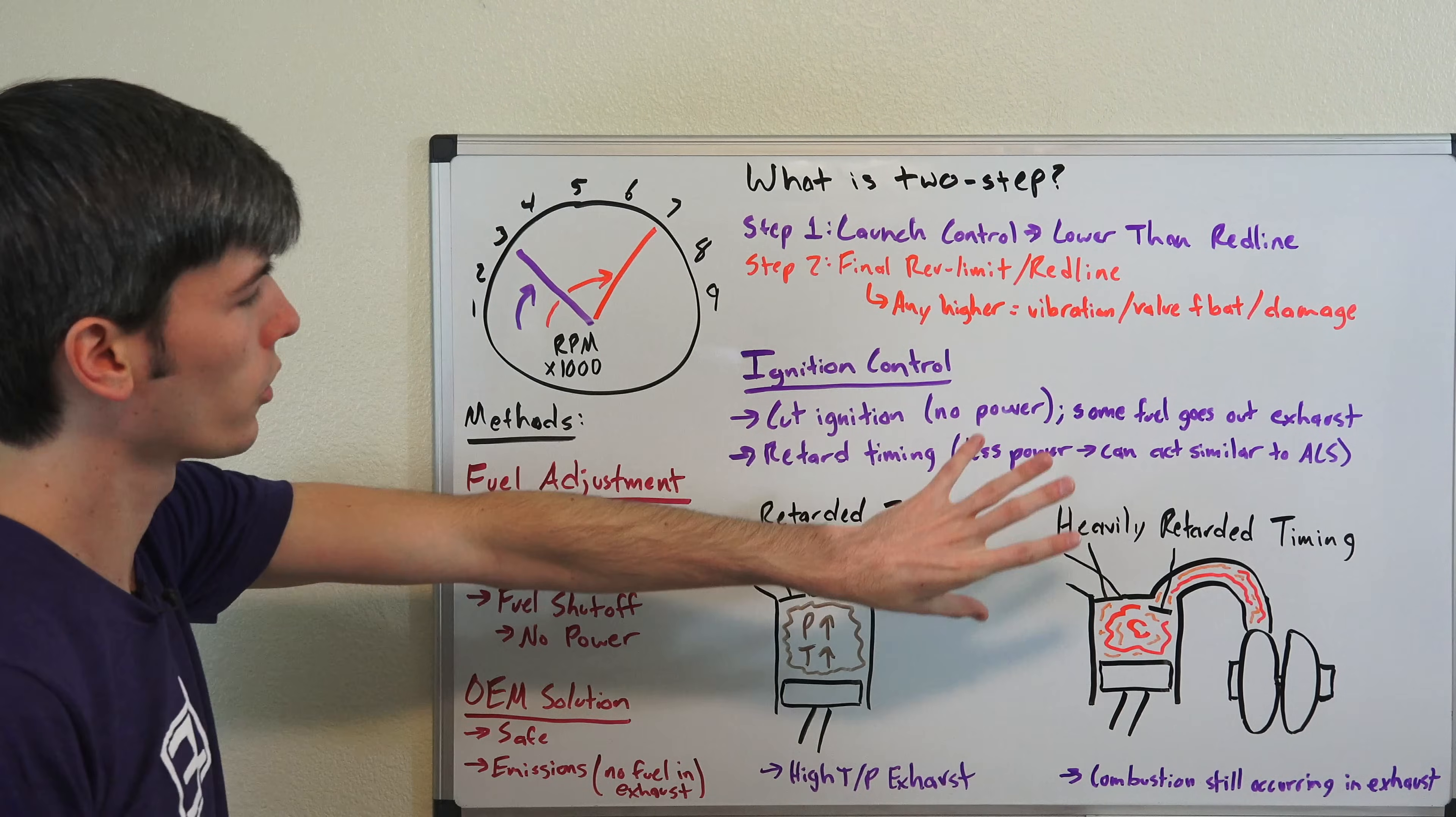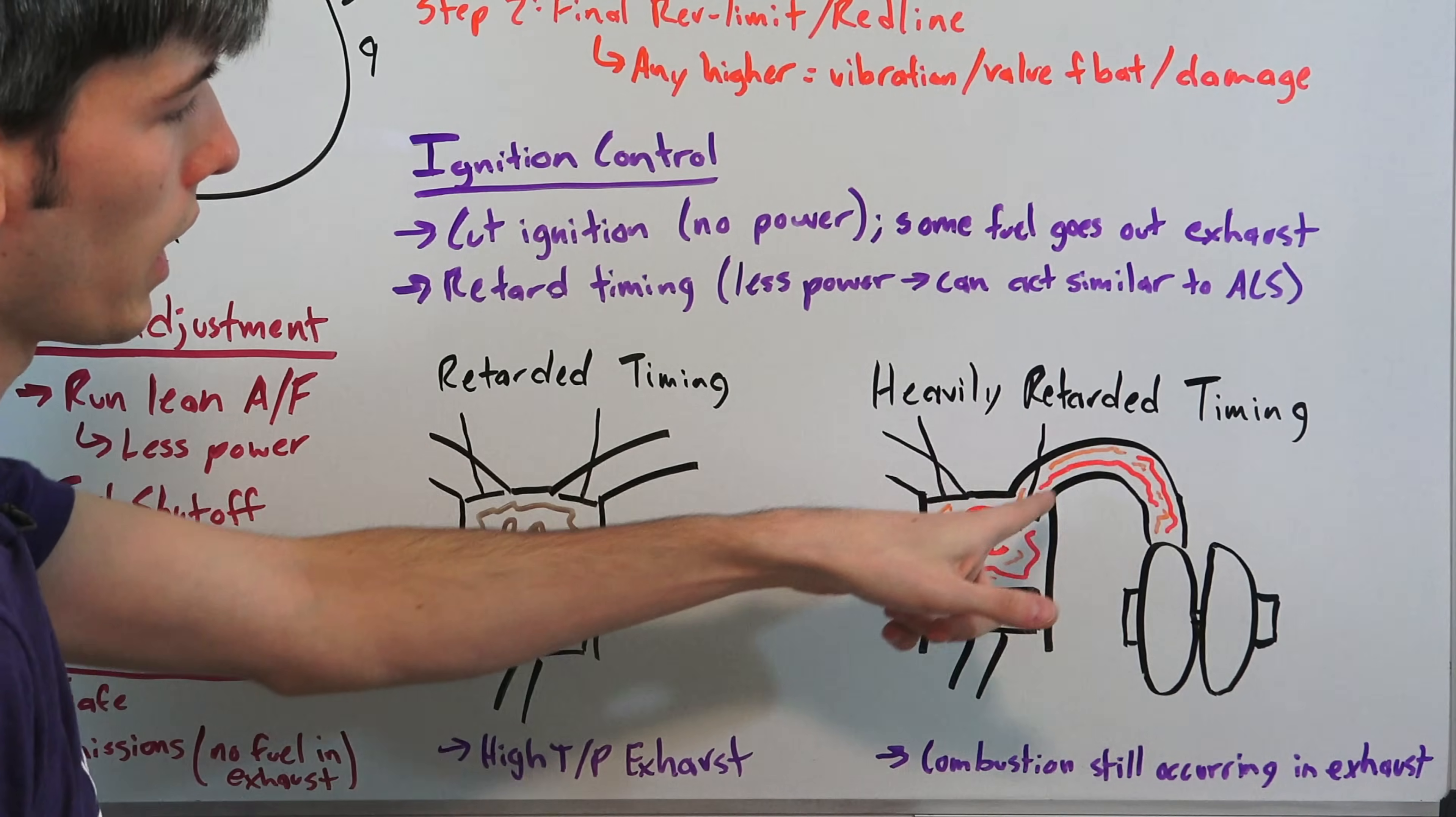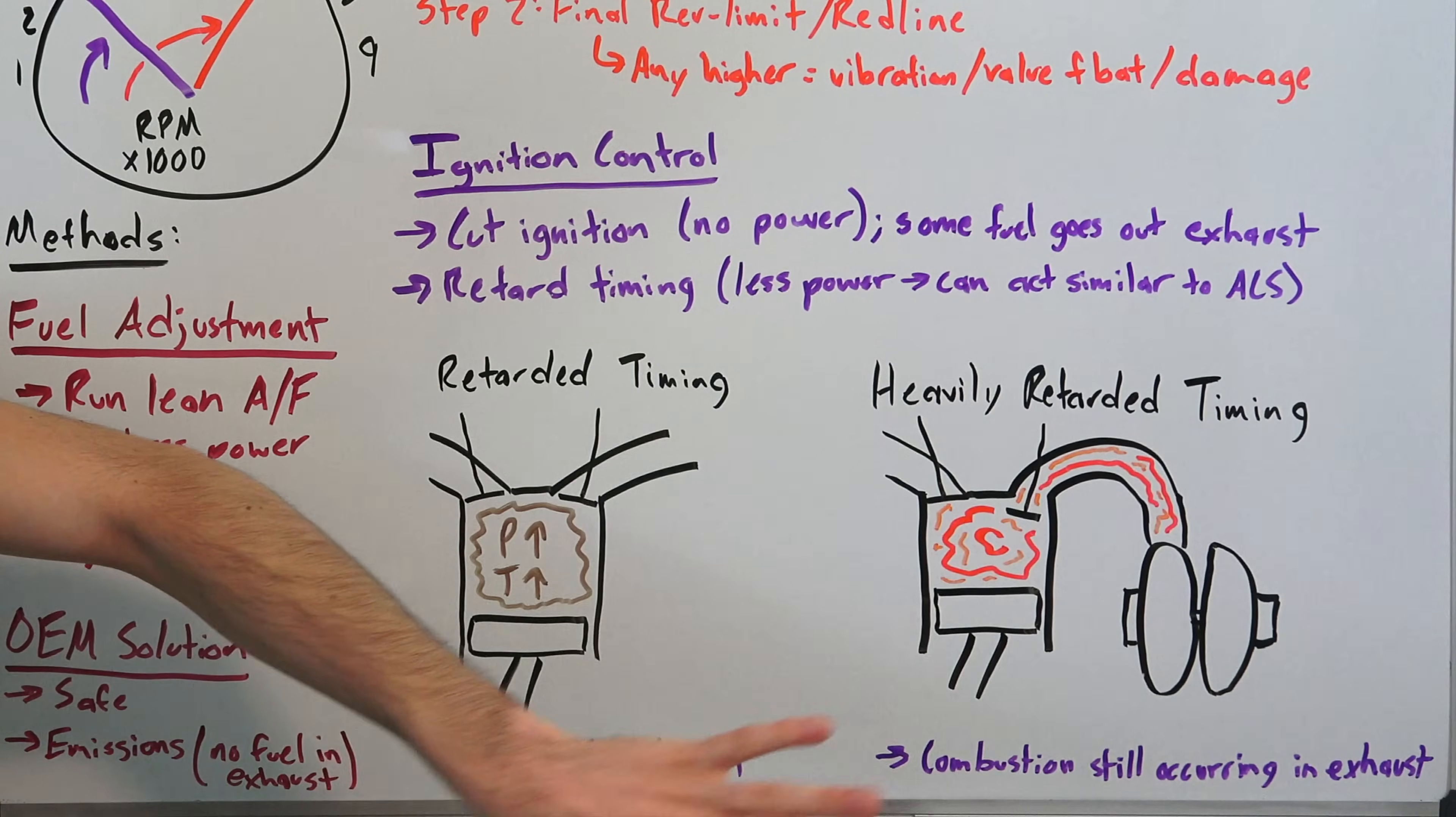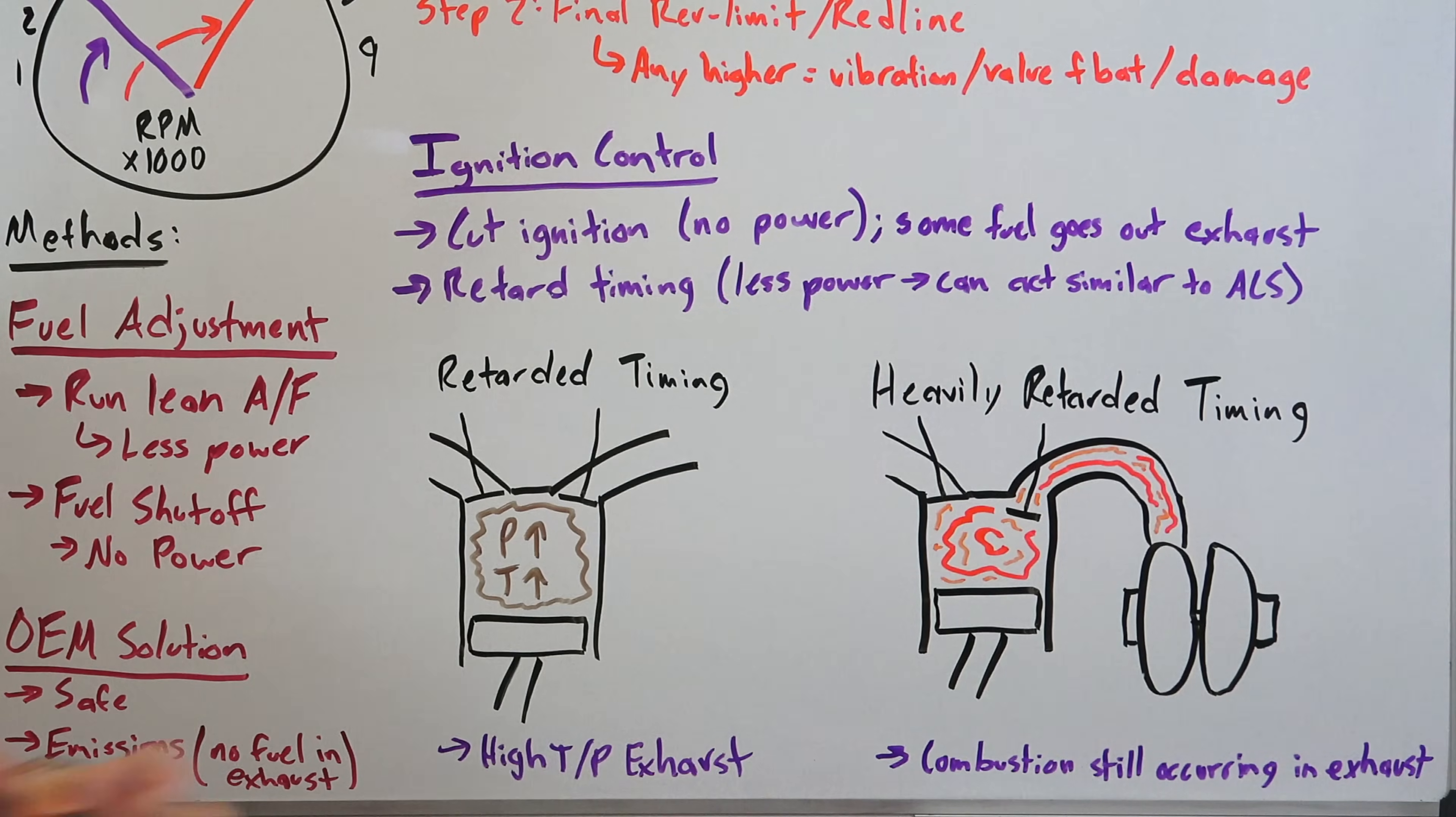So this is how two-step rev limiters got associated with anti-lag systems and spitting flames out the exhaust, because if they do heavily retard the timing, you can be sending combustion, you can still have combustion occurring in your exhaust manifold and in your turbocharger. So clearly you want to have a system that's built properly for it, because you are going to be putting a huge strain on your exhaust system here, which you typically wouldn't be doing by doing something like the fuel adjustment, wouldn't be quite as harsh, or if you were to not retard the timing too much, so that you didn't have combustion occurring in the exhaust manifold and beyond.